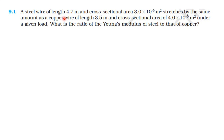Working with: steel wire length 4.7 m, copper wire length 3.5 m, cross-sectional area of steel wire 3×10⁻⁵ m², cross-sectional area of copper wire 4×10⁻⁵ m². Both wires stretch by the same amount under the same applied load force. Find the ratio of Young's modulus of steel to copper.